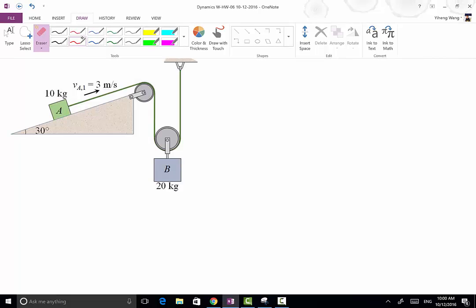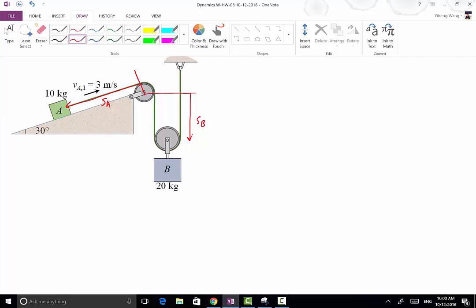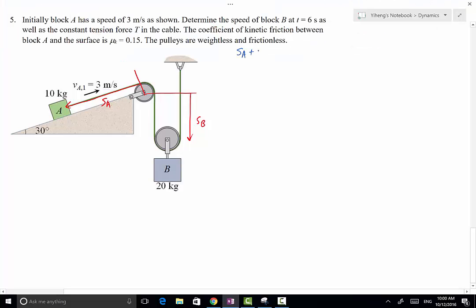First of all, we need to recognize that this is dependent motion. Therefore, we can do a quick analysis if we set this to be the datum for A. So this is SA and this is the datum for B and this is SB. You can see that SA plus 2 SB is a constant L, which means that VA plus 2 VB equals 0, and AA plus 2 AB also equals 0. Actually, we don't need acceleration in this case.